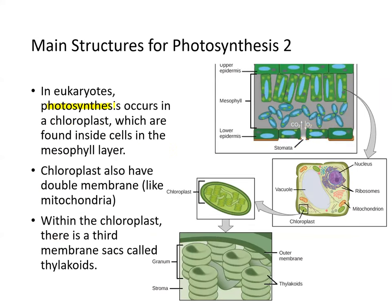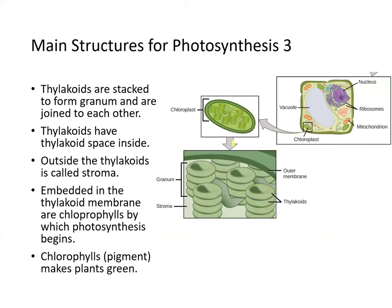In eukaryotes, photosynthesis occurs in chloroplasts, which are found inside the cells in the mesophyll layer. The chloroplasts also have double membranes, just like mitochondria. Within the chloroplasts, there's a third membrane sac called the thylakoids, stacked on top of each other. Thylakoids are stacked to form what we call a granum — one stack is called the granum.